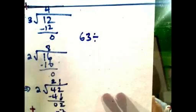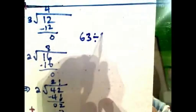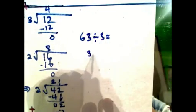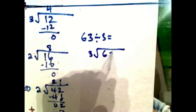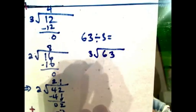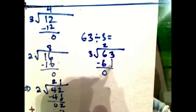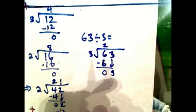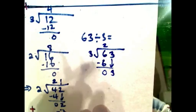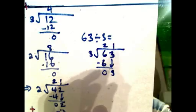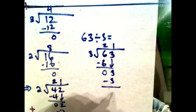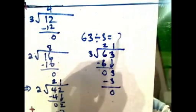Let's try one last one for 2 digits divided by 1 digit: 63 divided by 3. We express it as 3 divided into 63. 3 goes into 6 how many times? Twice. 2 times 3 is 6, minus the difference, that's 0. Bring down the 3. 3 goes into 3 how many times? Once. 1 times 3 is 3, subtract the difference, that's 0. So the answer is 21.